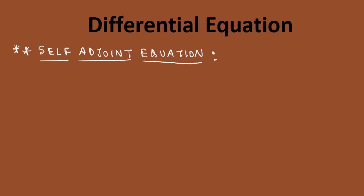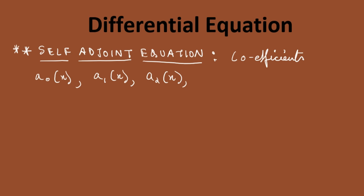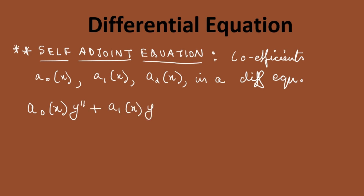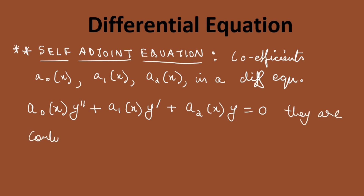In this, what is happening — suppose you have coefficients: a0(x), a1(x), a2(x). In a differential equation, suppose you have these coefficients and the differential equation is given as a0(x)·y'' + a1(x)·y' + a2(x)·y = 0. If you have this and they are continuous in the interval.